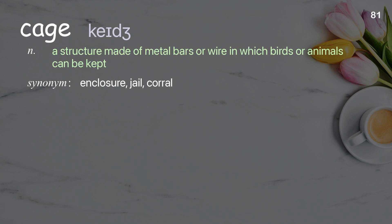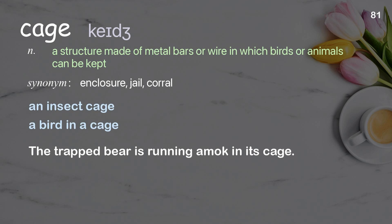Cage: a structure made of metal bars or wire in which birds or animals can be kept. Examples: an insect cage, a bird in a cage. The trapped bear is running amok in its cage.